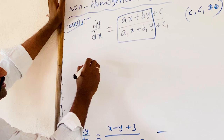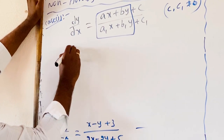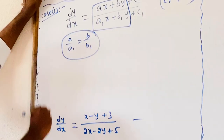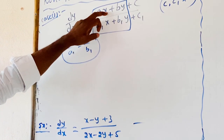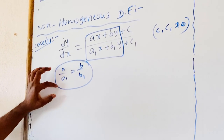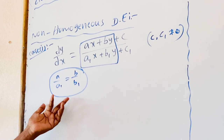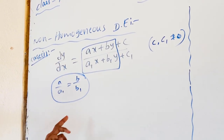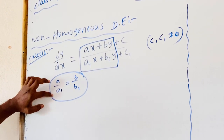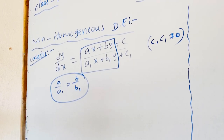We have a condition: a/a1 equals b/b1, meaning the coefficients of x and y are in equal ratio. Then we can use this method. There are two cases to identify and solve a non-homogeneous differential equation. We are using Case 1, which applies when a/a1 equals b/b1.